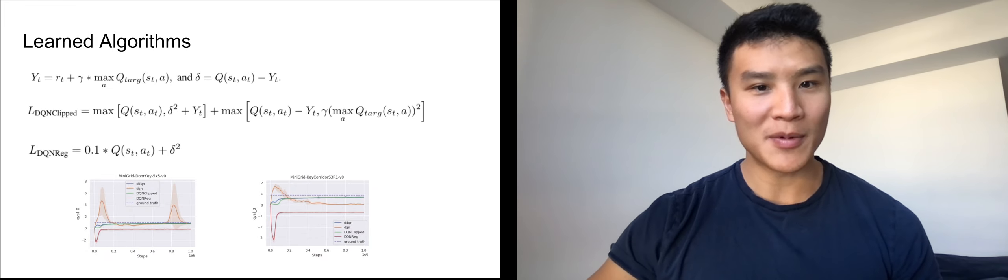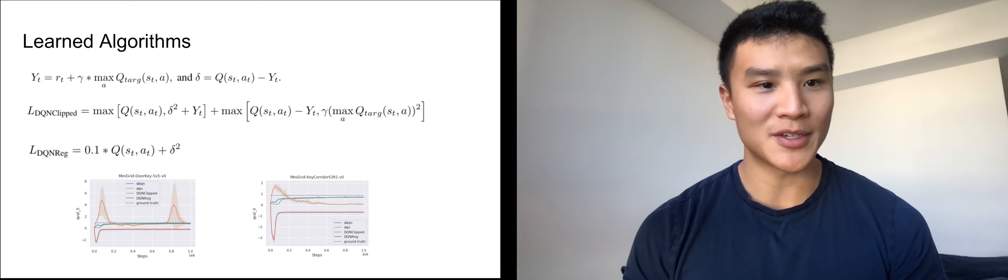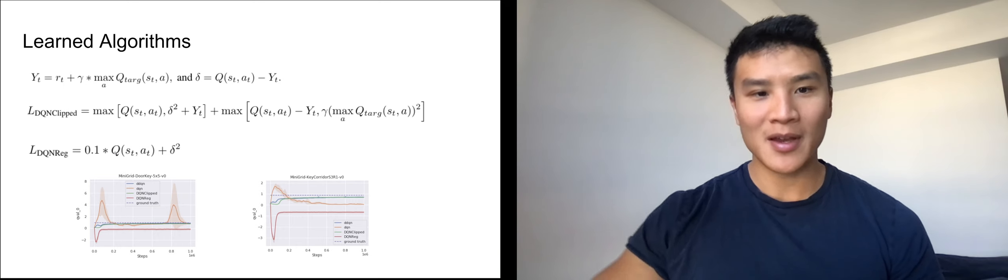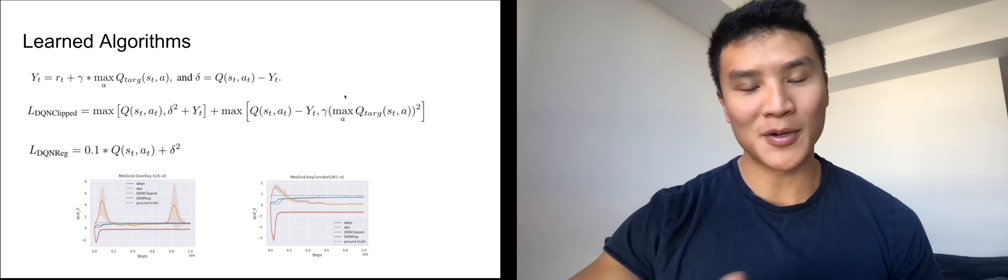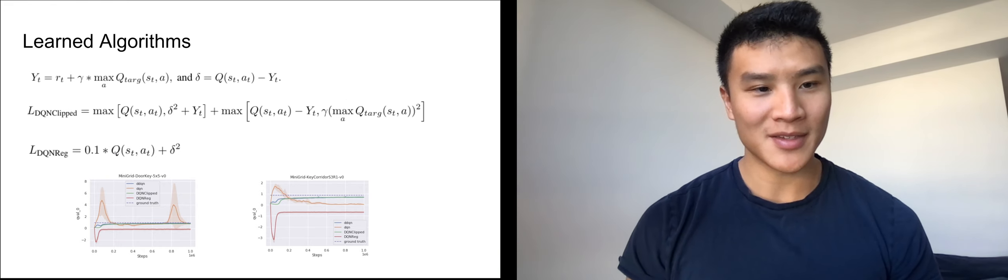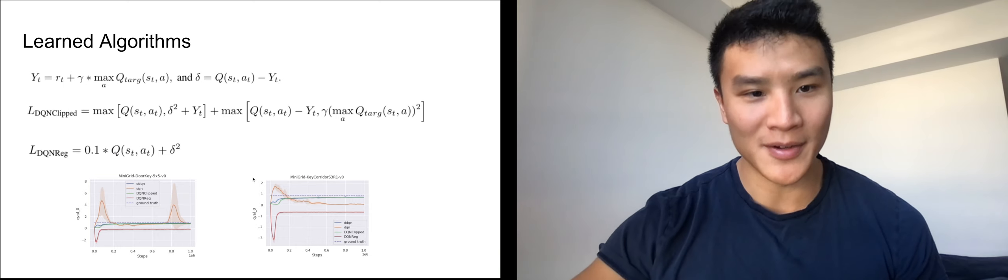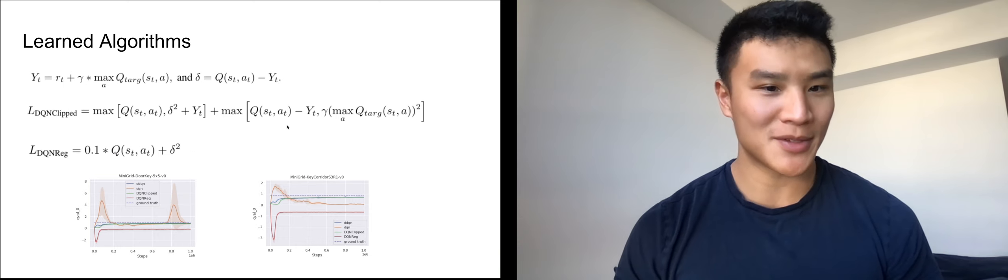I'll briefly highlight two learned algorithms which we called DQN-clipped and DQN-reg. We noticed that even though we didn't explicitly code this, we find that DQN-reg can basically regularize Q values because overestimating Q values is a common problem with DQN.